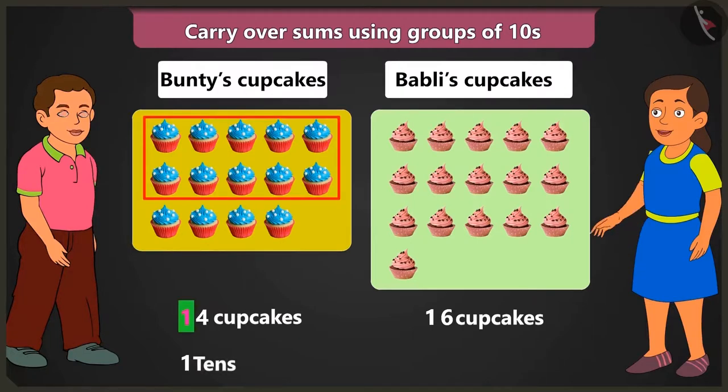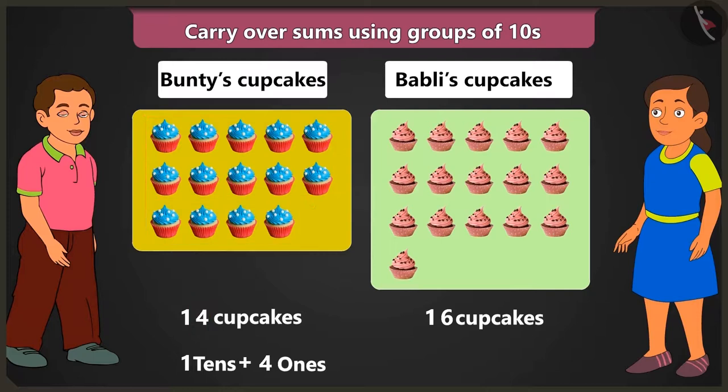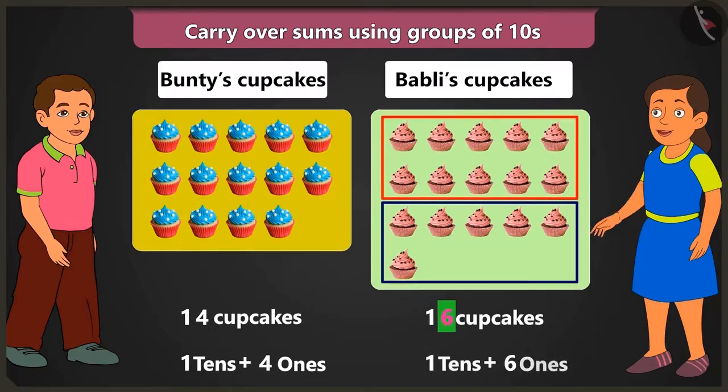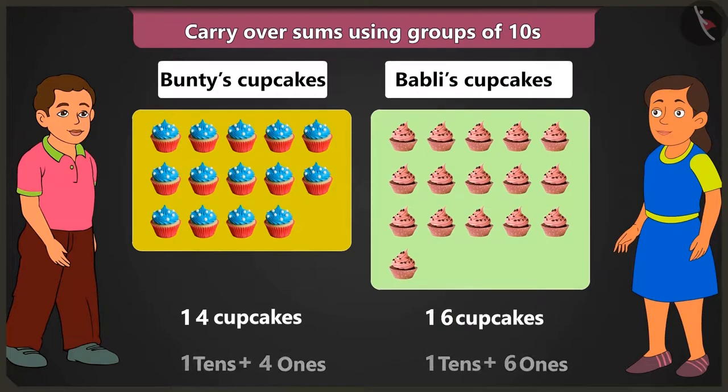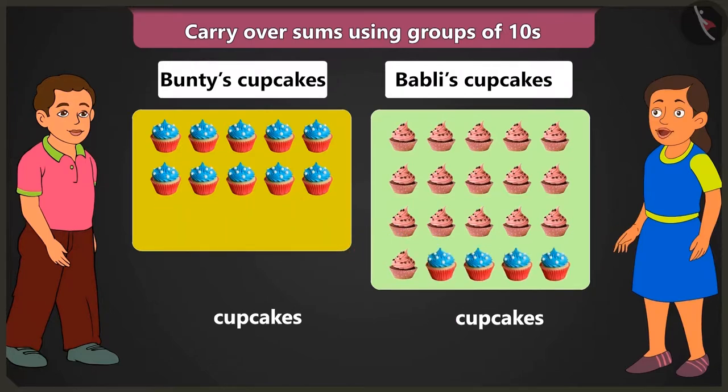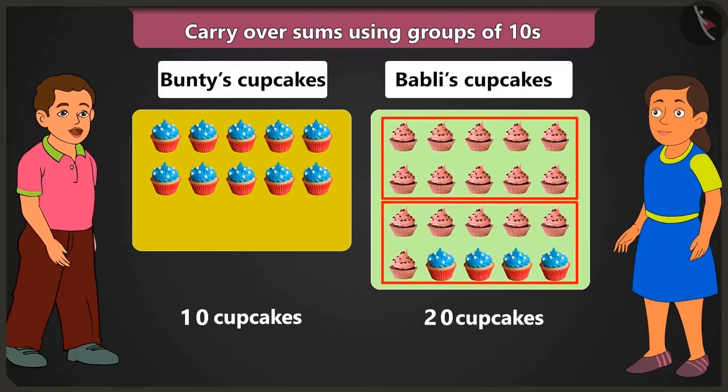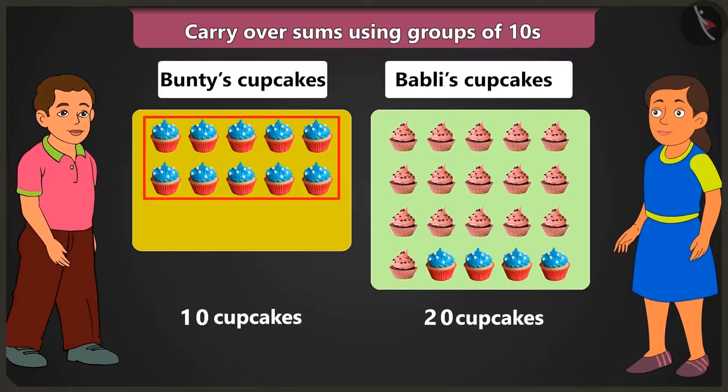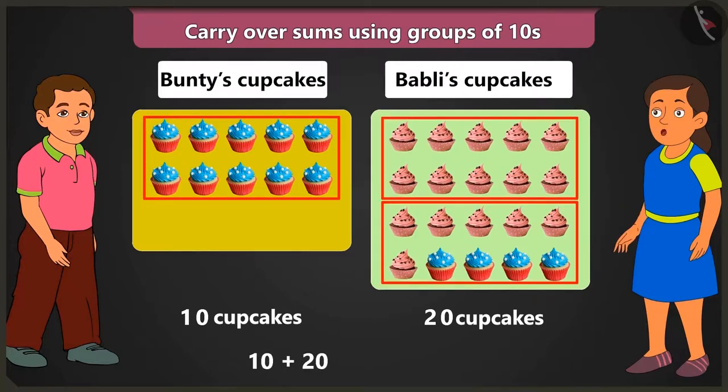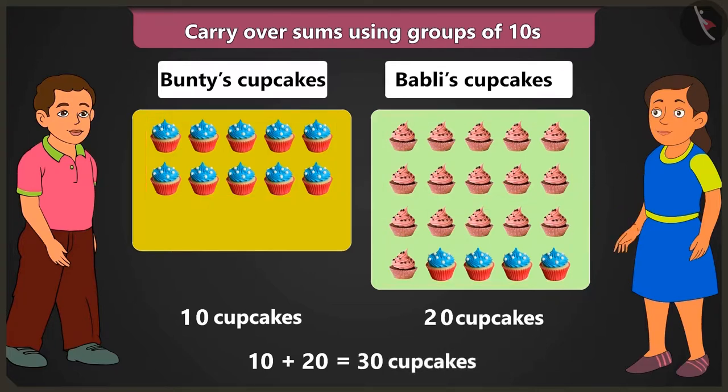14 which means there is 1 ten and 4 ones cupcakes. If you give me 4 of your cupcakes, then you will be left with 1 ten cupcakes. And then you will be left with 2 tens that are 20 cupcakes. So in this way, your 10 and my 20 will add up to 3 tens that are 30 cupcakes in total.